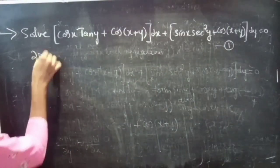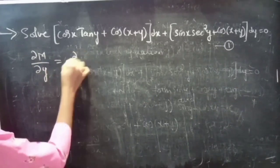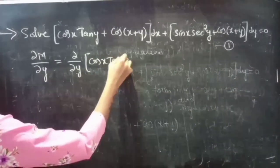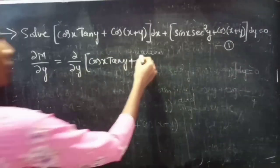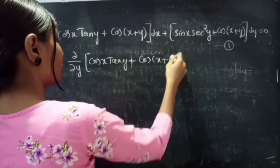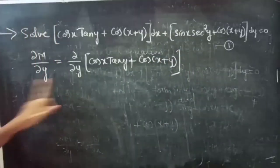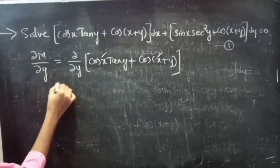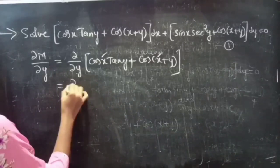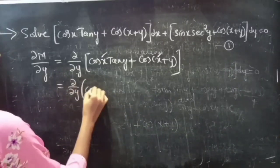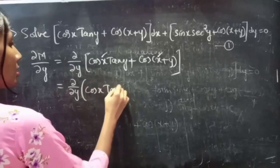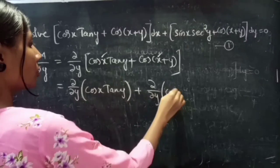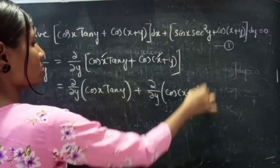Partial derivative of M with respect to y equals ∂/∂y of (cos x · tan y + cos(x+y)). Since we are doing partial derivative with respect to y, x is treated as constant.